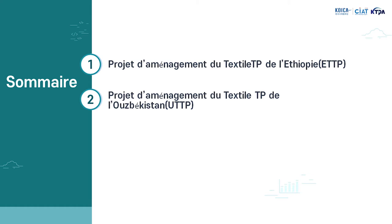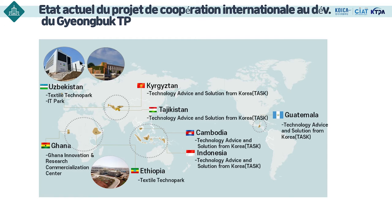Le cas exemplaire consiste au projet d'aménagement du textile Technopark de l'Éthiopie et le projet d'aménagement du textile Technopark de l'Ouzbékistan. Pendant ce cours, j'expliquerai l'état actuel des projets de coopération de développement international qui sont mis en œuvre par le Kyongbuk Technopark, et comment nous menons le projet afin d'appliquer le modèle Technopark coréen au territoire local.